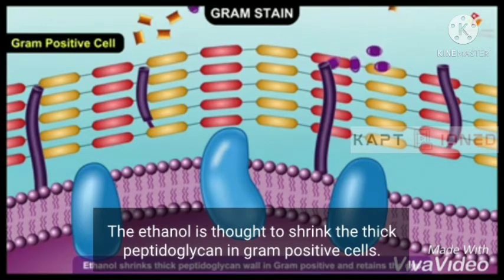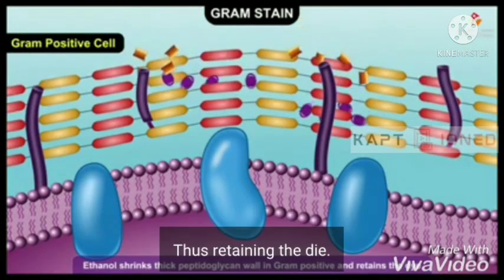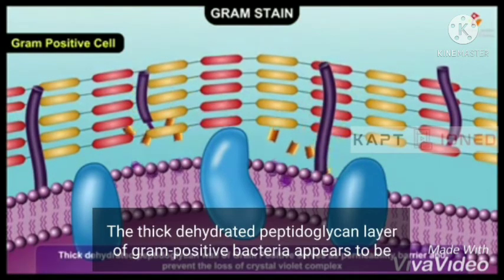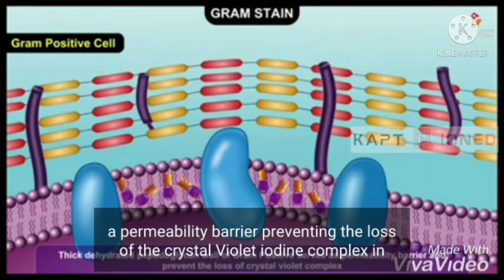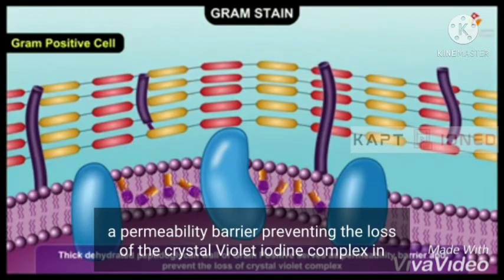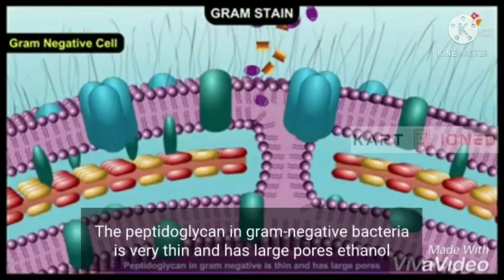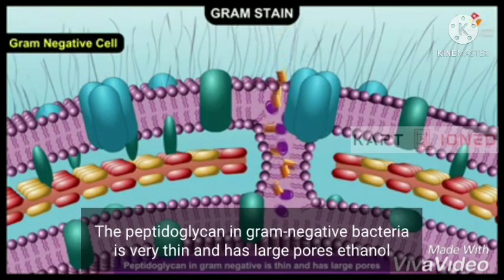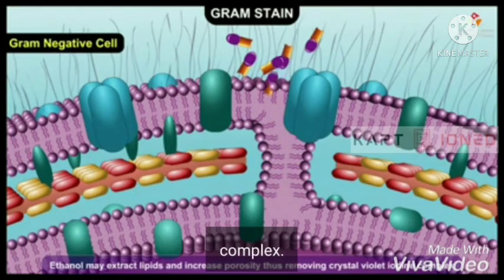The ethanol is thought to shrink the thick peptidoglycan in Gram-positive cells, thus retaining the dye. The thick, dehydrated peptidoglycan layer of Gram-positive bacteria appears to be a permeability barrier, preventing the loss of the crystal violet-iodine complex. In contrast, the peptidoglycan in Gram-negative bacteria is very thin and has large pores. Ethanol may extract lipids and increase the porosity, thus removing the crystal violet-iodine complex.